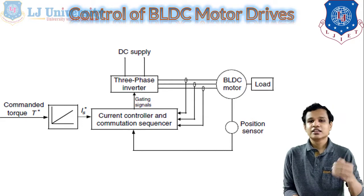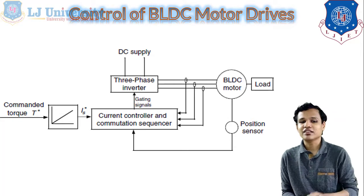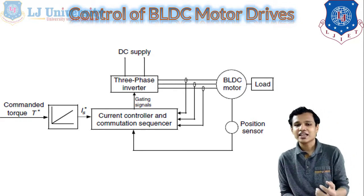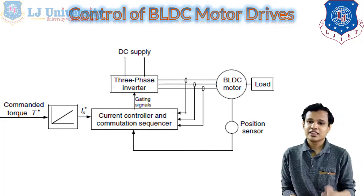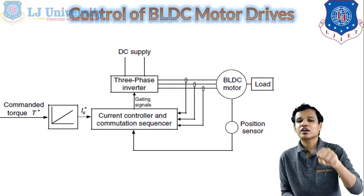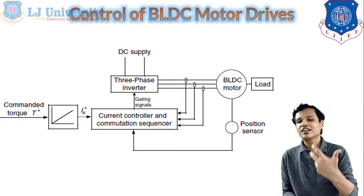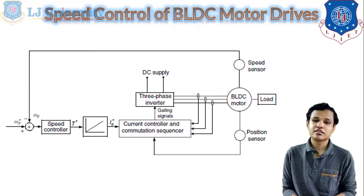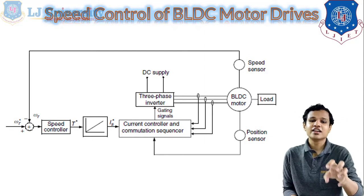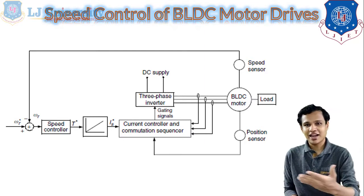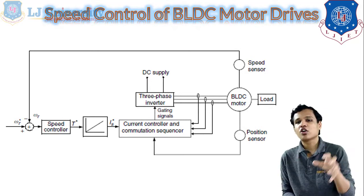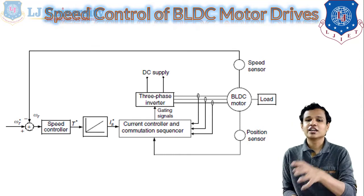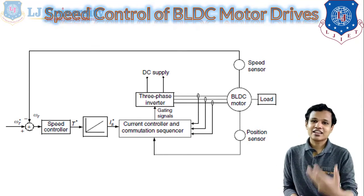For the control of BLDC motor drives, the first diagram shows torque control. When a torque command is provided, a current controller and computation sequencer are attached, which connect to a three-phase inverter that drives the BLDC motor. The gating signal is provided through the current controller and commutation sequencer. For speed control, a speed controller is inserted before the input to the controller, and it connects similarly through the current controller, commutation sequencer, and three-phase inverter to the BLDC motor.